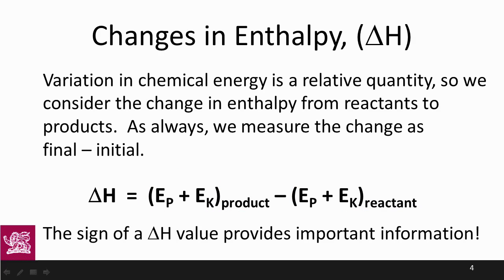That means that if we have a negative value, that means that the products have less energy than the reactants, which means that at some stage we've released some energy. So this is an exothermic type of arrangement. If the product has more energy than the reactant, then we get a positive delta H value, which means that we have an endothermic reaction.